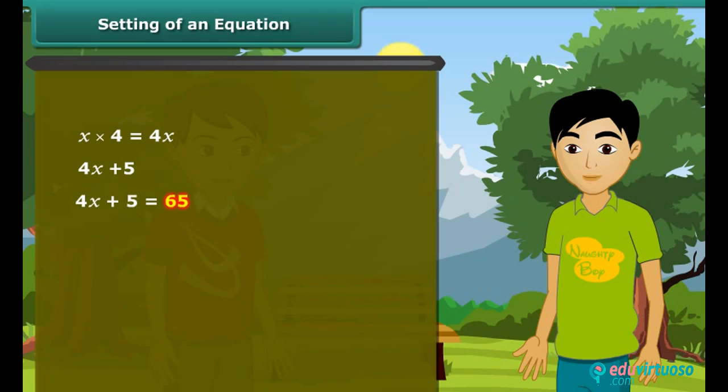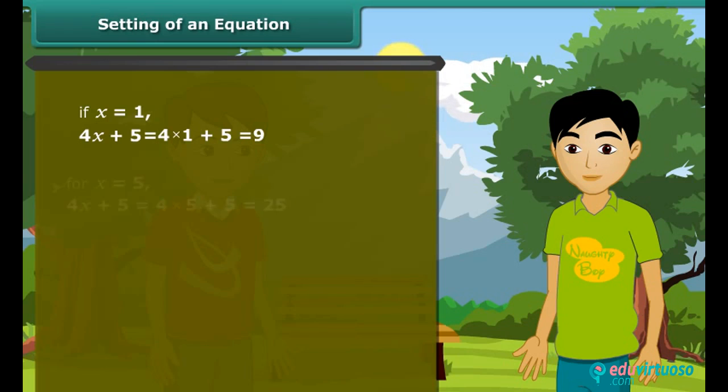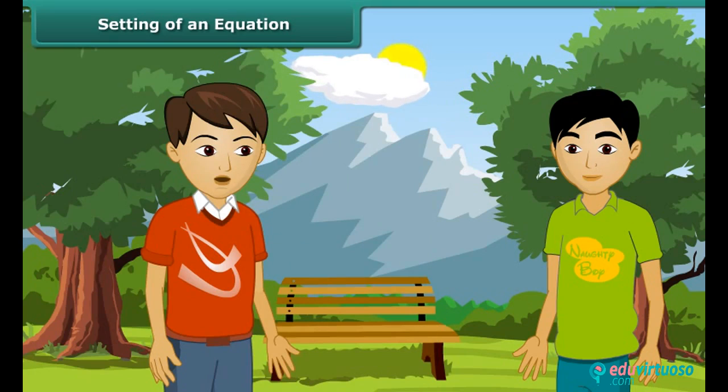Now to find the number, I put different values of X. If X is 1, we get the answer as 9. If X is 5, we get answer as 25. Similarly, for X is equal to 15, we get the answer 65. This is so simple.